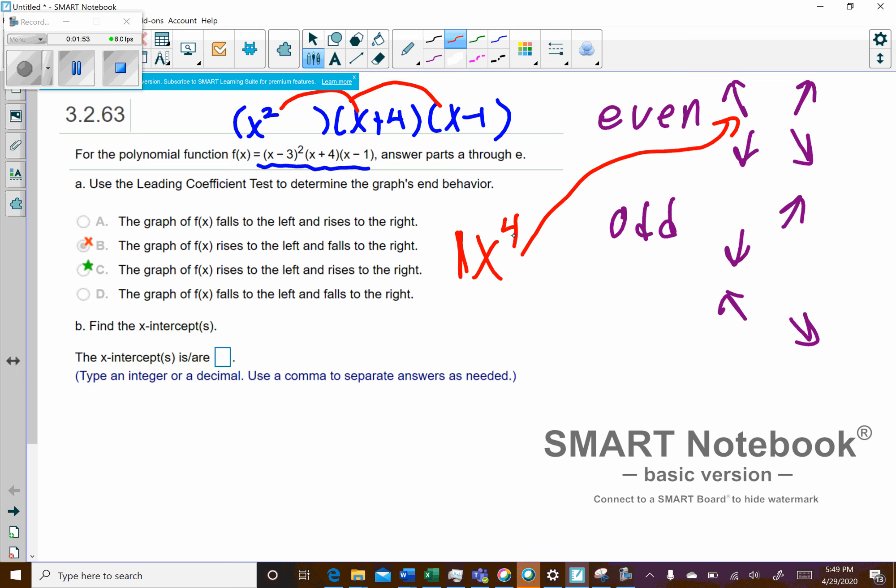And then if it would have been odd, then it would have been up to the right, down to the left. And if it would have been negative in front and odd, then we would have had this scenario right here. But it's to the power of 4, it's positive in front, so it's going to rise in both directions.